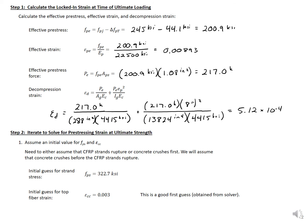Our next step is to iterate to solve for the pre-stressing strain at ultimate strength. We need to assume either that the CFRP strands rupture or the concrete crushes first, make that assumption, check it, and modify if needed. In this example, we'll assume the concrete crushes first — so our top fiber strain is 0.003. We also guess an initial strand stress of 322.7 ksi. If the calculated strand stress differs from this guess, we would need to iterate; alternatively, a solver can handle the iteration.